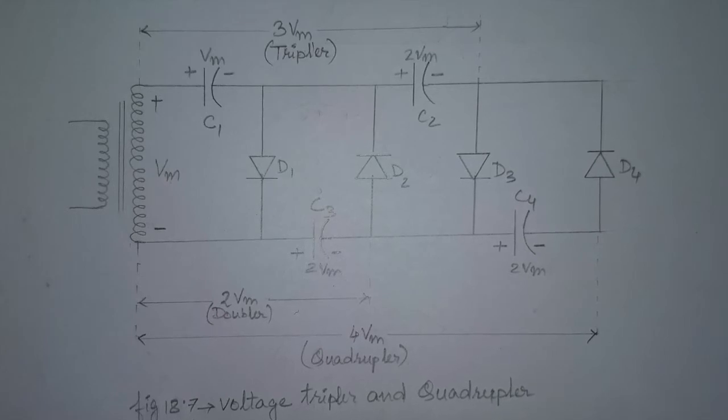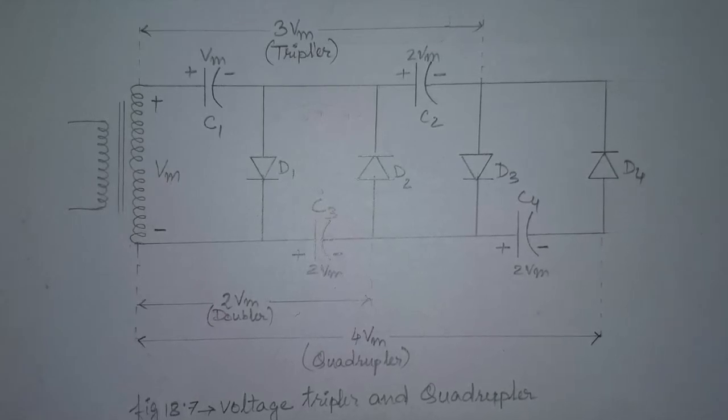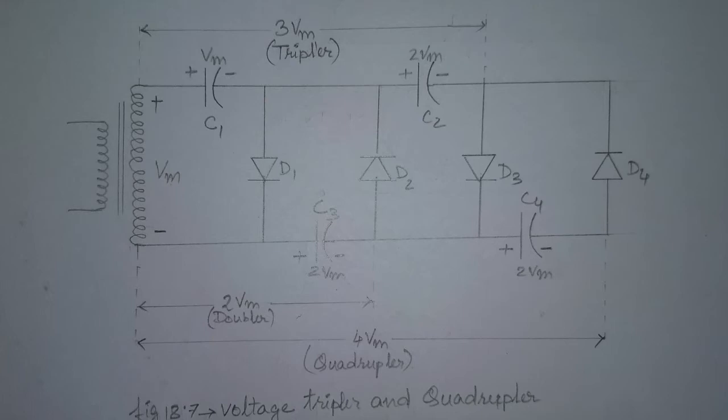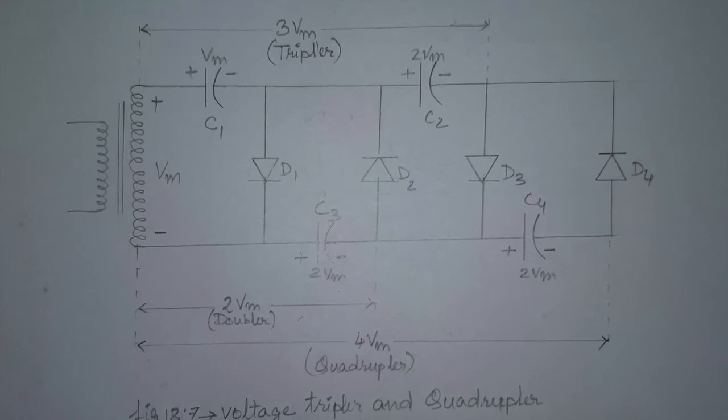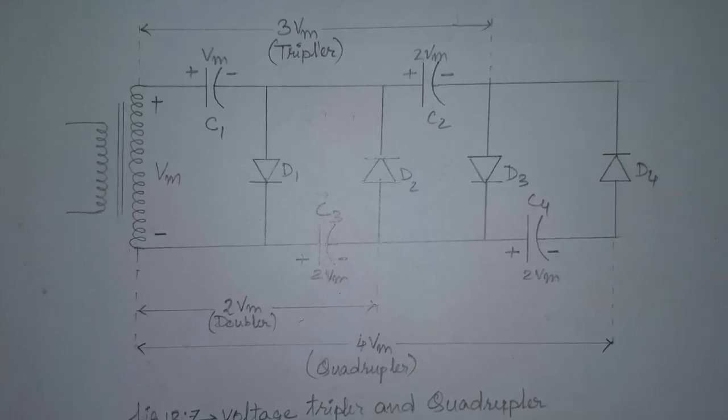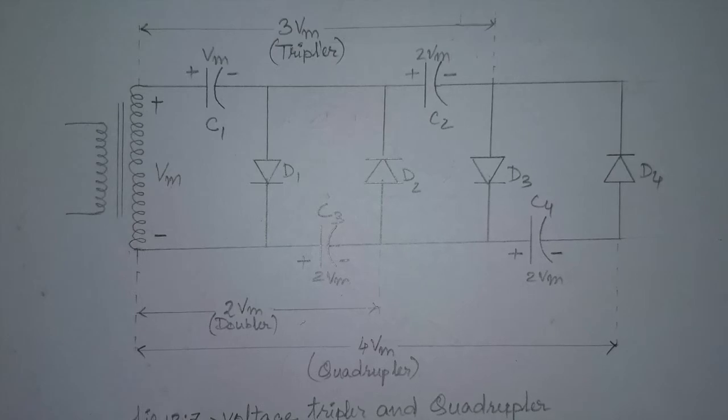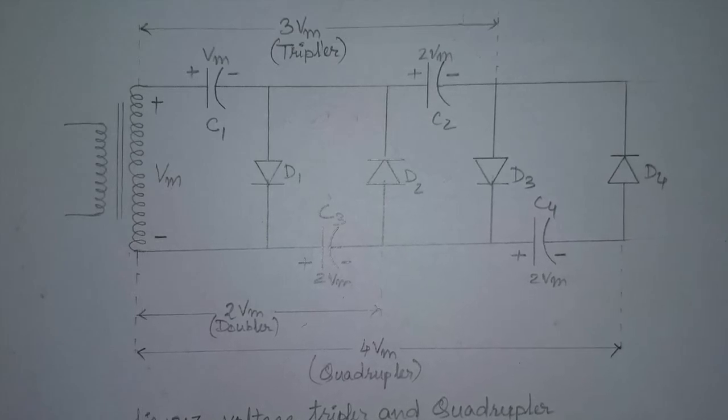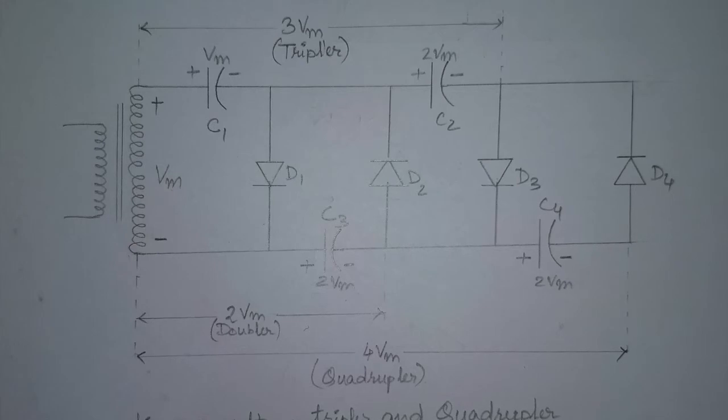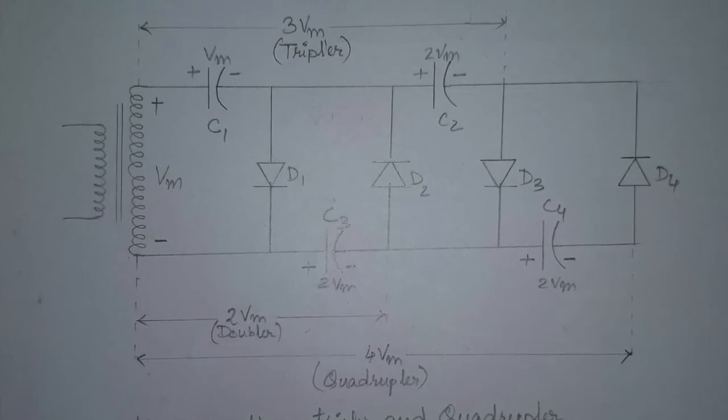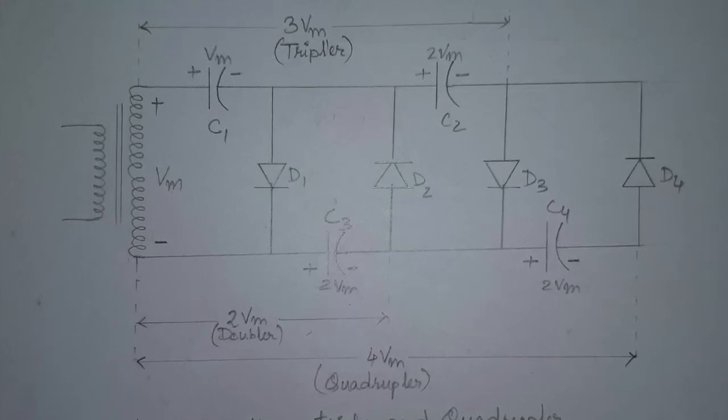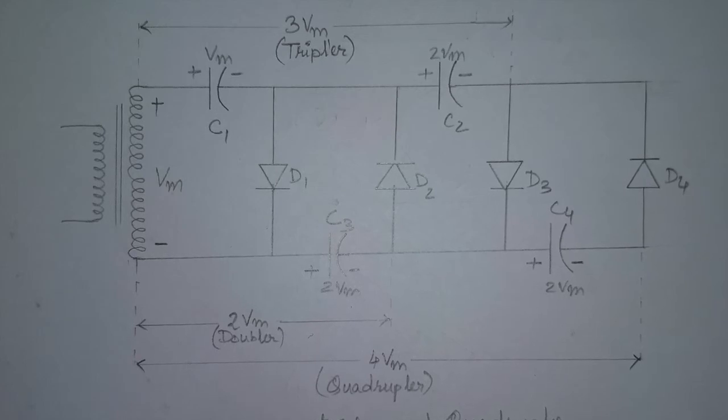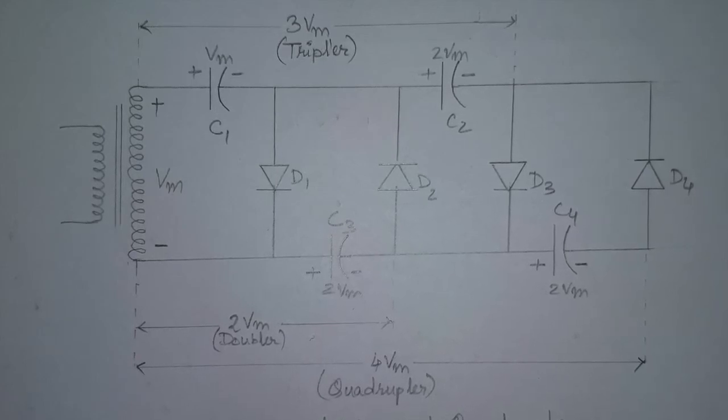During the positive half cycle, diode D1 acts as a short circuit and charges capacitor C1 to voltage Vm. During the negative cycle of the transformer secondary voltage, C2 charges to peak voltage equal to twice Vm, which is developed by the transformer secondary and voltage across capacitor C1.